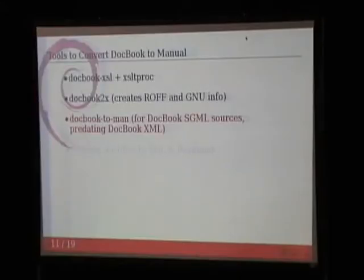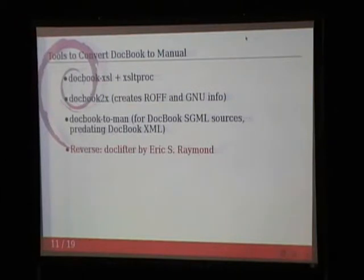There's an older tool — it was one of my first Debian packages about eight or nine years ago — that deals with the old DocBook SGML format. And there's a reverse tool that produces DocBook from manual pages by Eric Raymond, called doclifter. I tried it just now — it works very well. It just crashes if you try to generate DocBook from the man page for the man command itself, but other man pages work well.